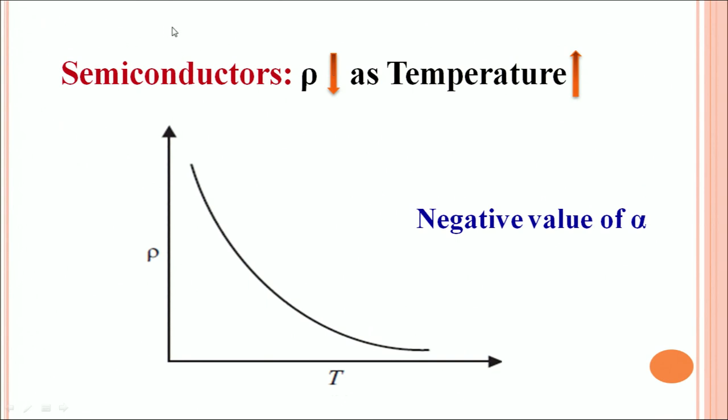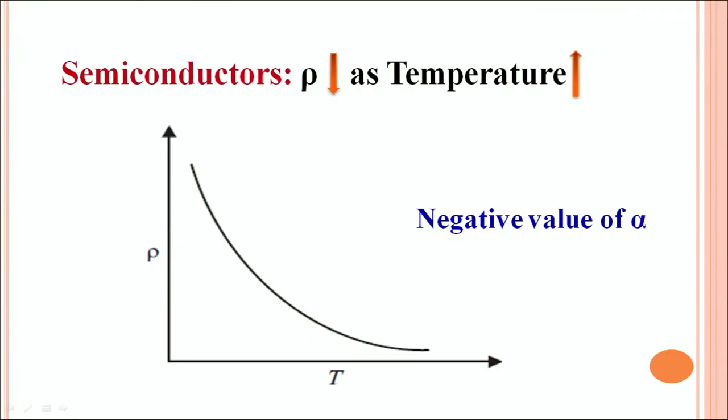Semiconductors do not behave like metals. Semiconductors behave, in fact, the other way round. The resistivity decreases as you increase the temperature. If you plot the resistivity versus temperature, then it is basically a non-linear graph with negative slope, which clearly signifies that for these materials the value of α is negative, not positive like metals.